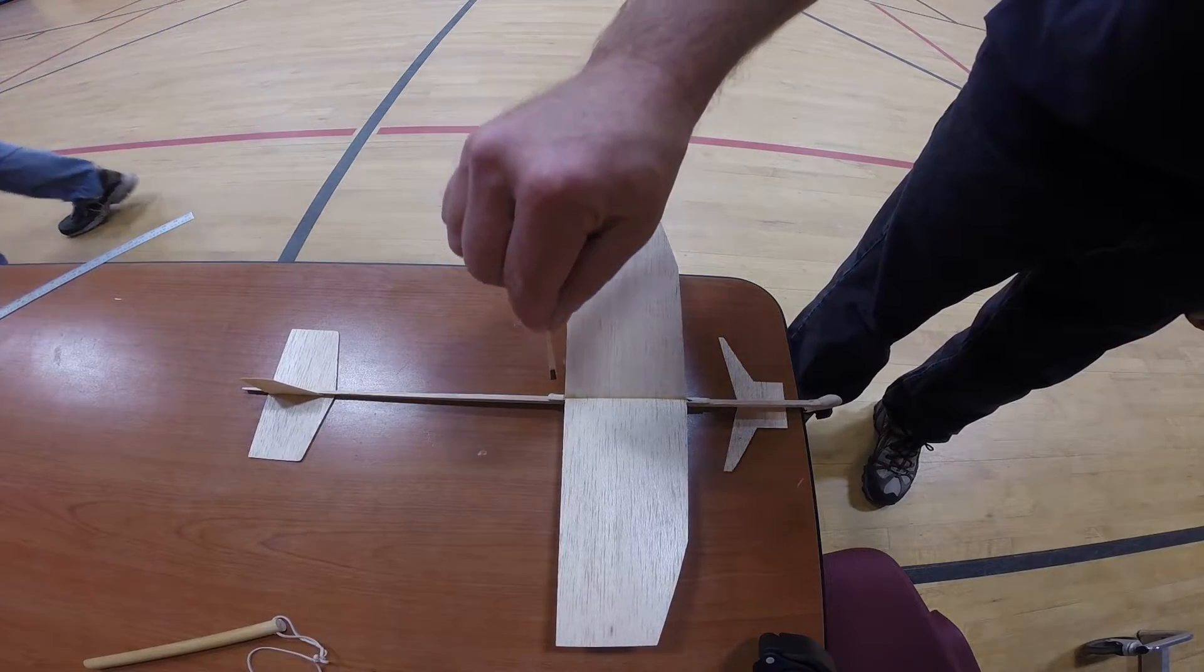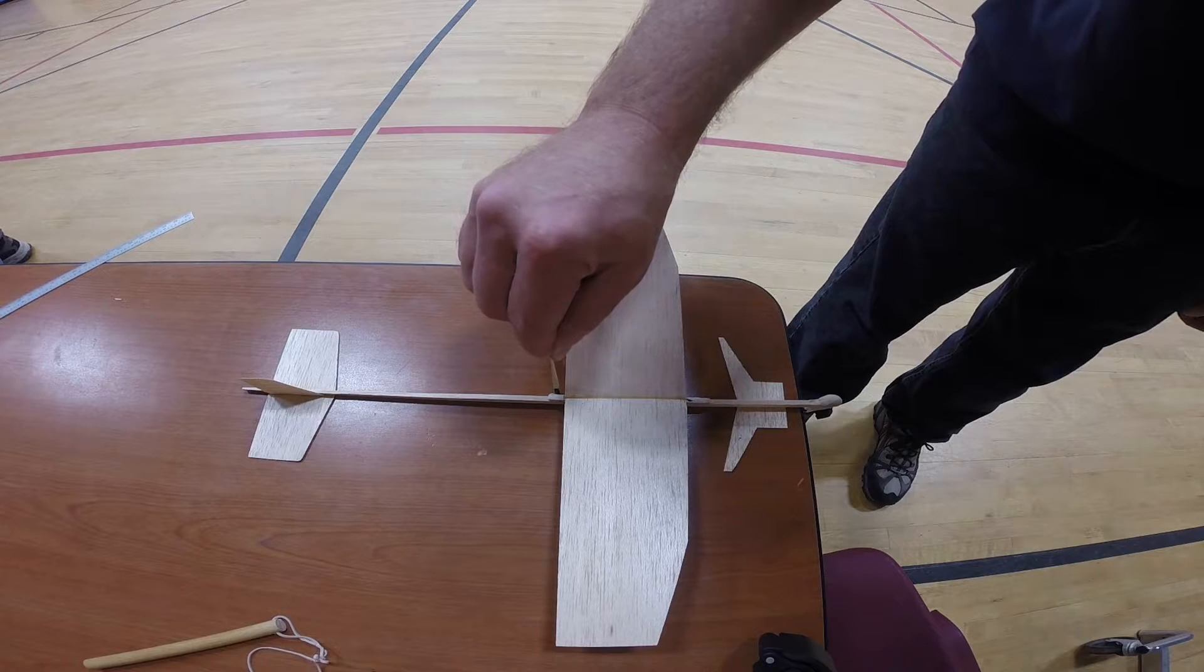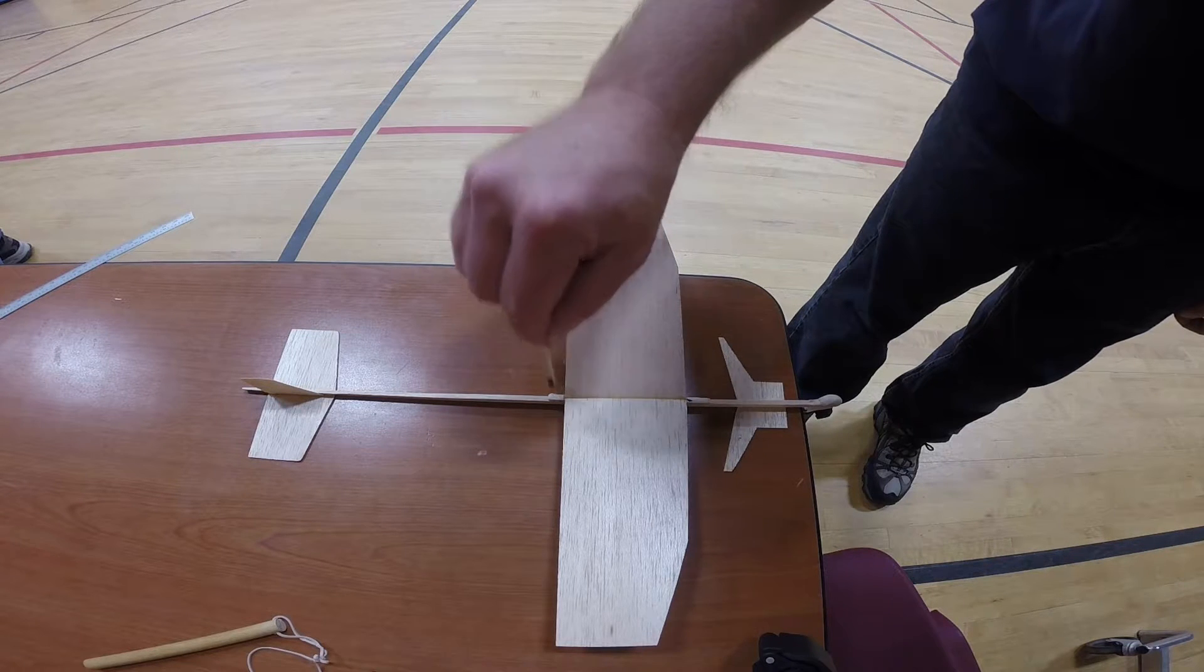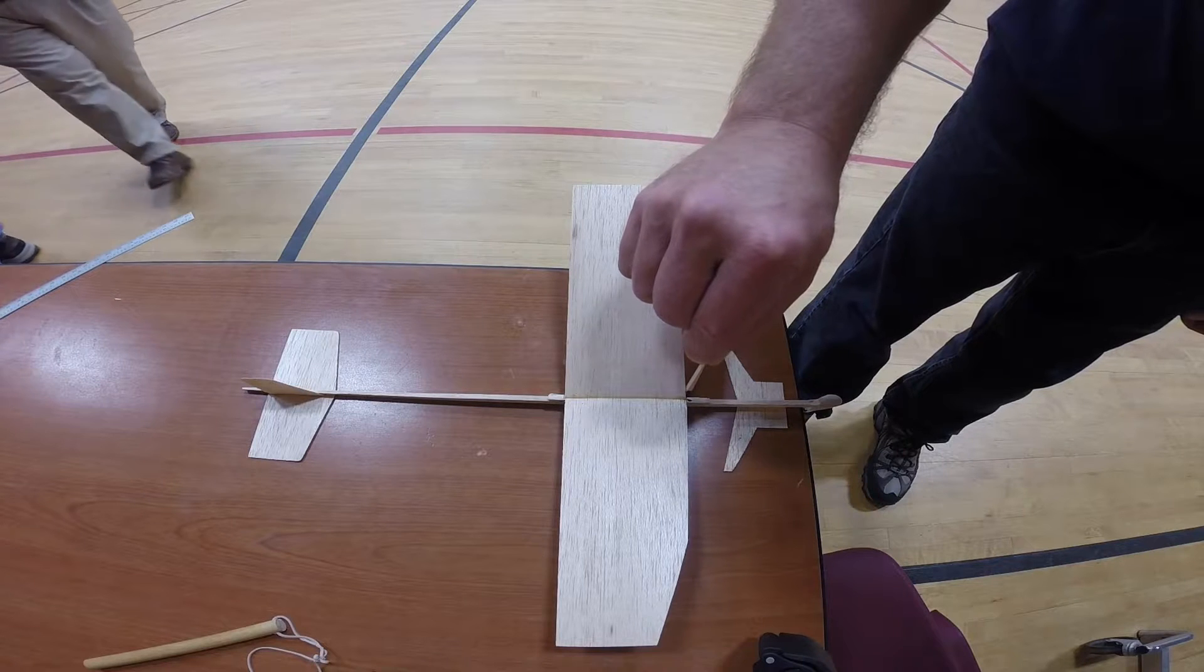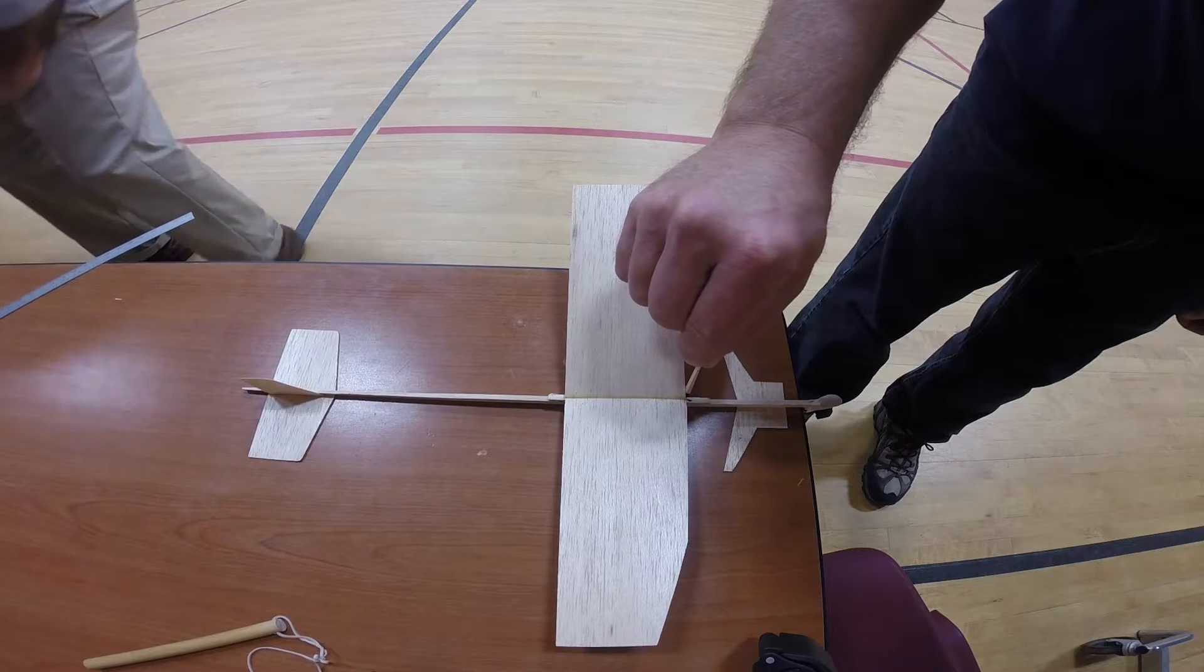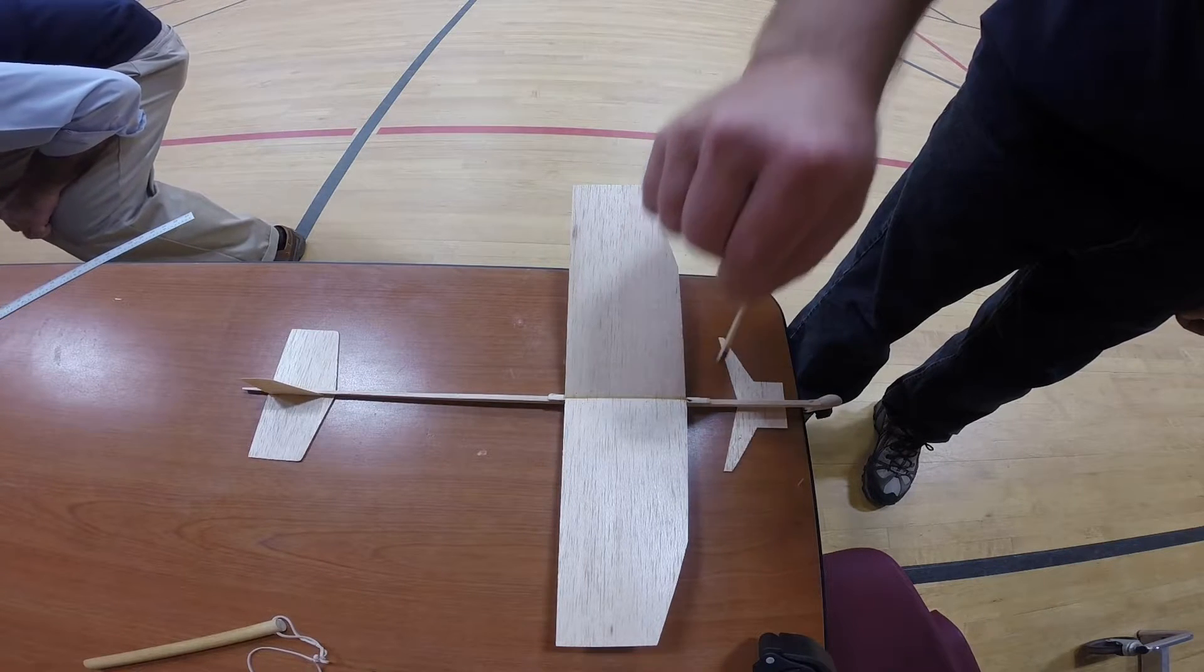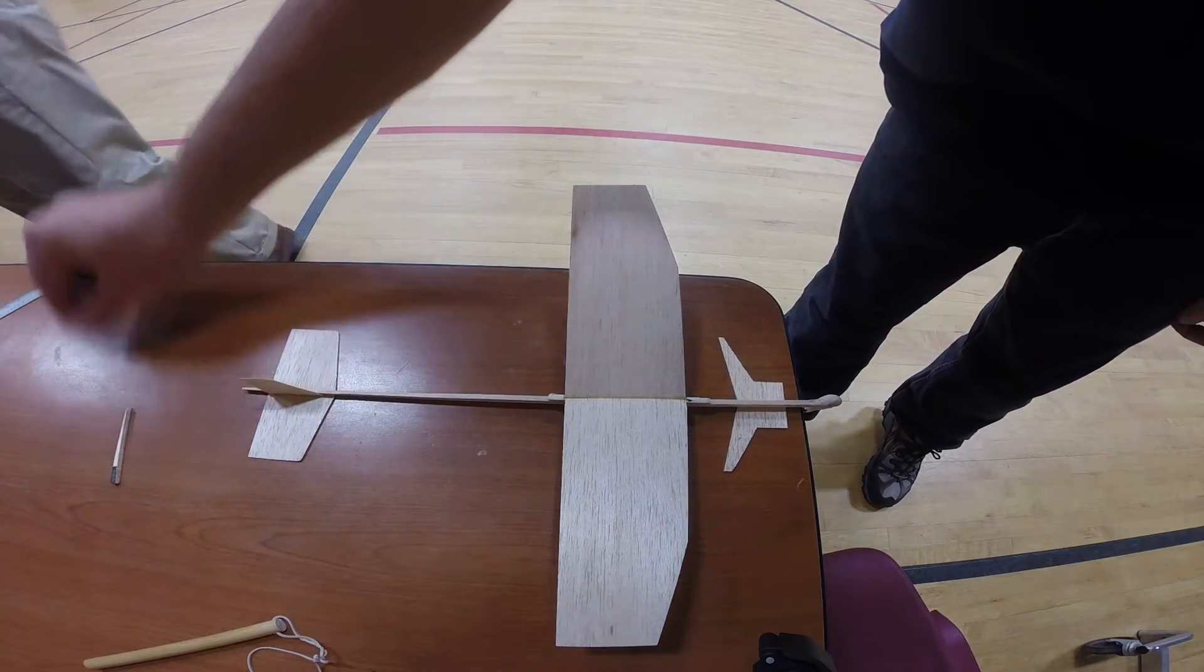To check the decklage, rest the wing where it meets the fuselage on a good straight edge, like the edge of a countertop or desk or even a ruler. View the glider from the side and measure the angle the horizontal stabilizer makes to the straight edge.